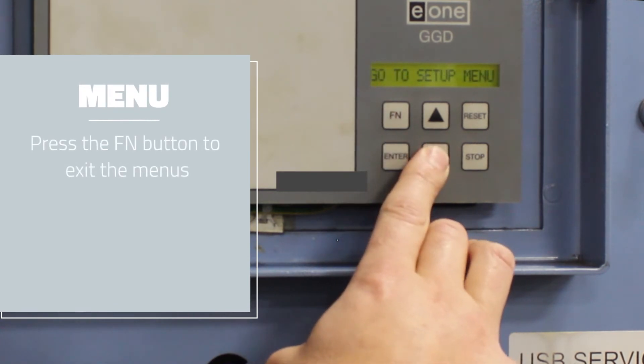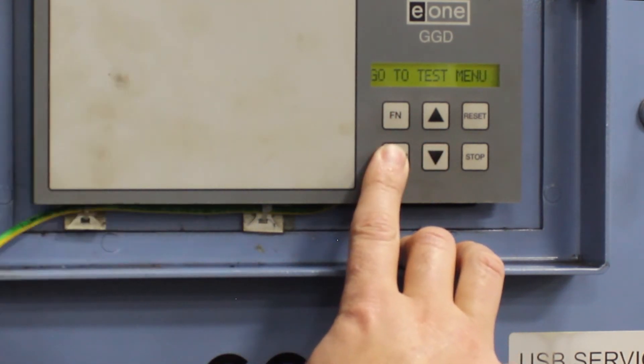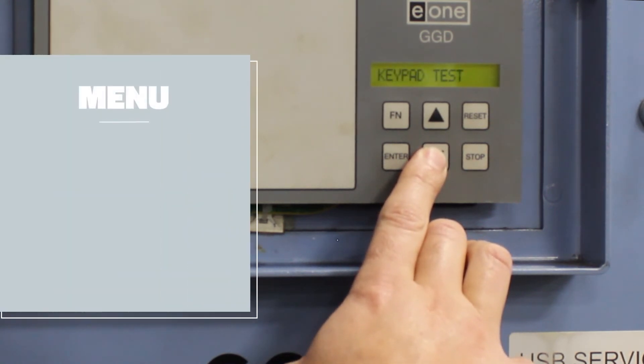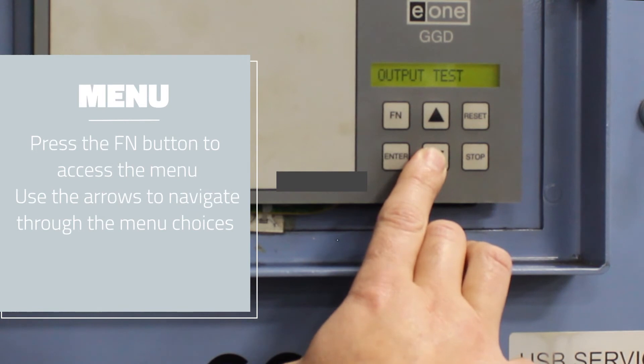Again, Function brings you out of these menus. Arrow down to the Test menu to perform the Contact Test, Keypad Test, Output Test, Power Test, Relay Test, Actuator Test, and the System Test.